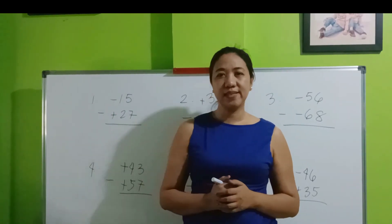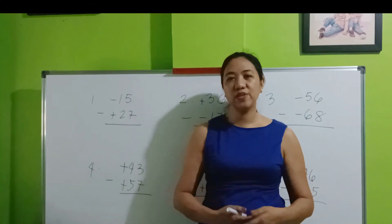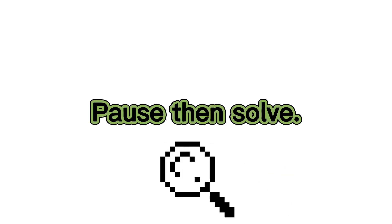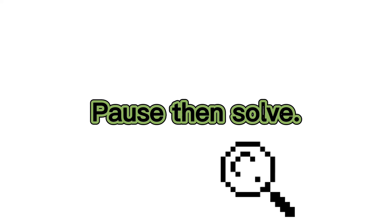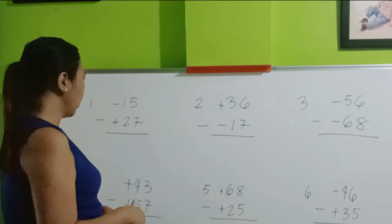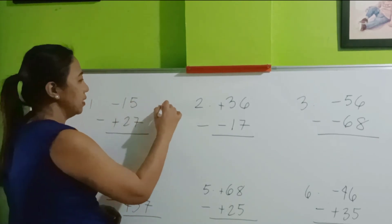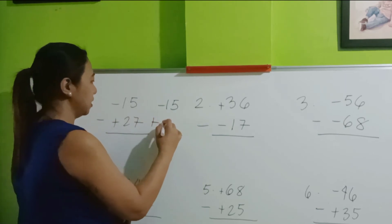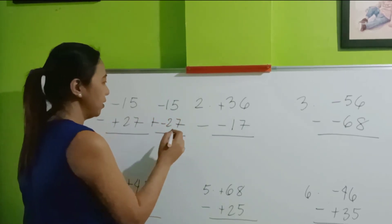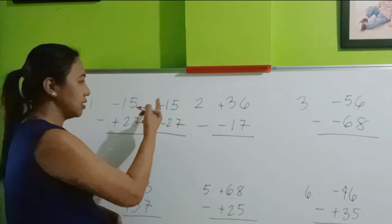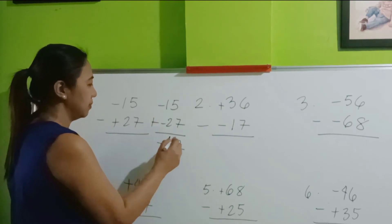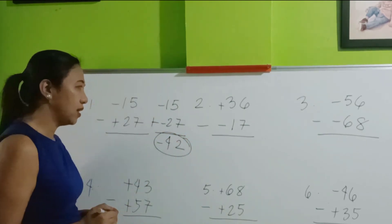Are you now ready for the quiz? Like the previous videos, pause the video and then come back later for the solutions. Now let's answer. Number 1: negative 15 minus positive 27. Copy the minuend. This becomes plus. This is turned into its opposite sign. Follow the rule in addition of integers — both are negative numbers, so let's just add and copy the sign. This is now negative 42.